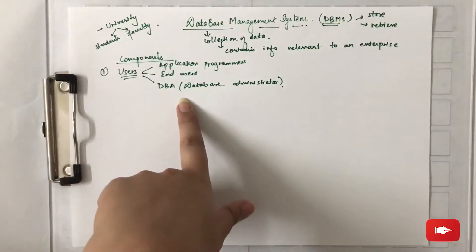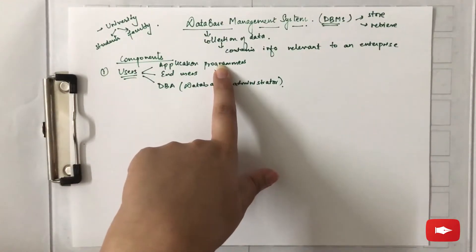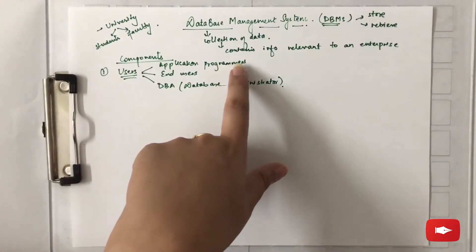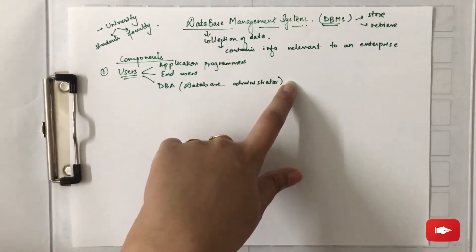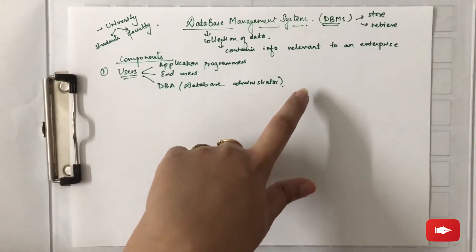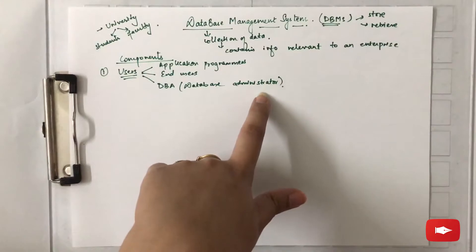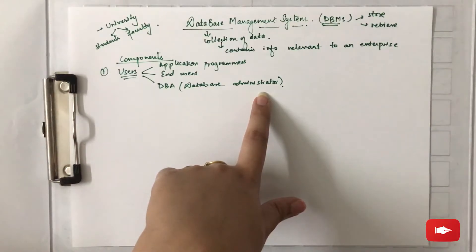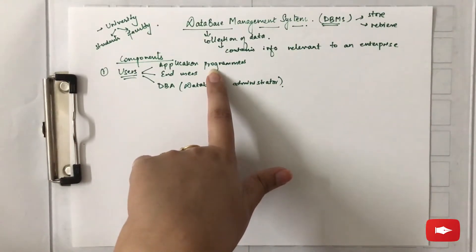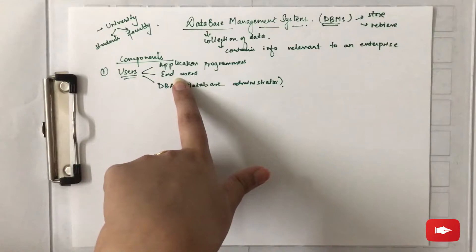These three users play different roles. Application programmers develop programs that can manipulate the database in different ways. When we need to retrieve information from the database, there needs to be a query language or an application program to retrieve the information, and that application program is developed by the application programmers.